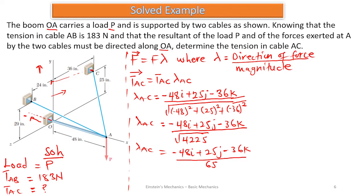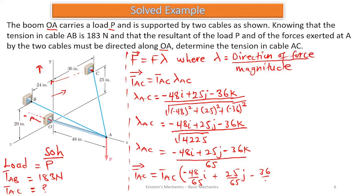Now to get the vector force TAC, we multiply the tension TAC by lambda AC: TAC = TAC × (−48/65 i + 25/65 j − 36/65 k). This is equation 1 — the tension in AC expressed in vector form.